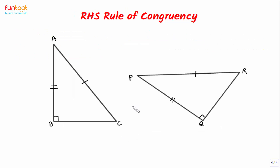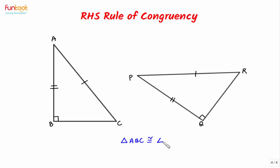Let's take an example and see whether right triangle ABC and right triangle PQR are congruent by RHS rule or not. The first condition is that both triangles should be right angle triangles — satisfied. We can see corresponding hypotenuses are equal as AC is equal to PR. One of the corresponding sides is also equal: AB is equal to PQ. All three conditions of RHS rule are fulfilled, so triangle ABC is congruent to triangle PQR by RHS congruency rule.